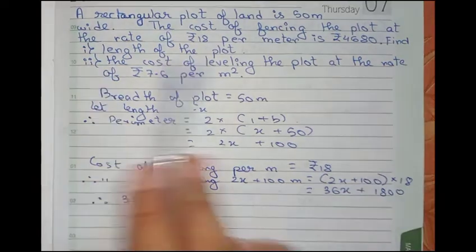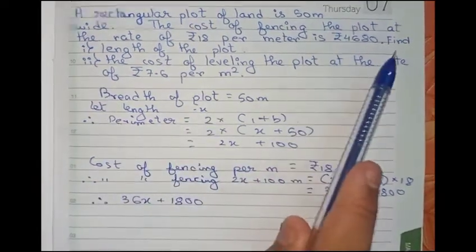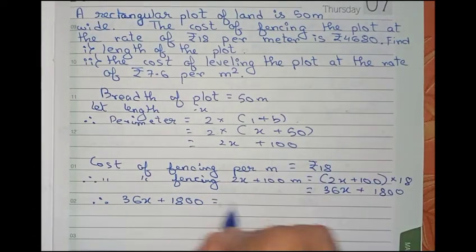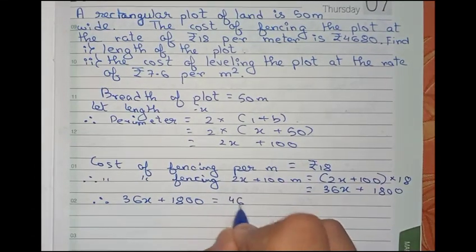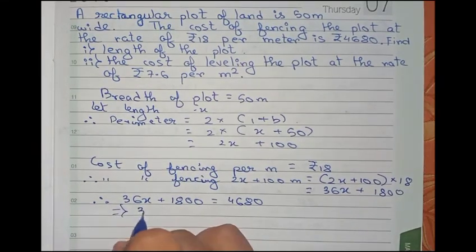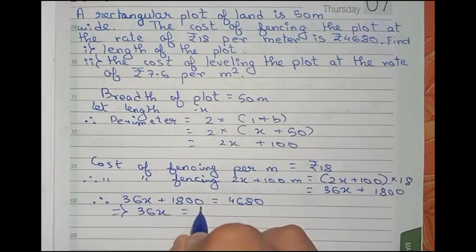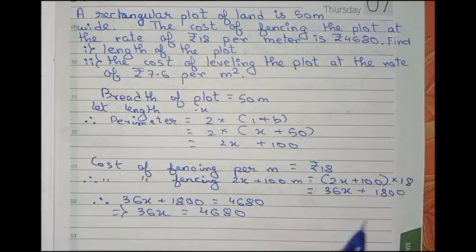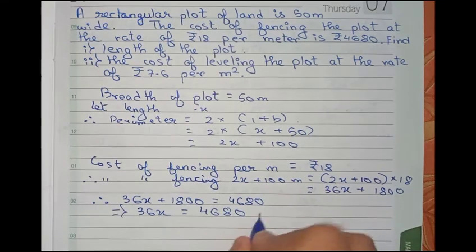But in the question, the cost of fencing the plot is given as 4680, that means they are equal. So that will be equal to 4680.